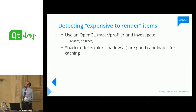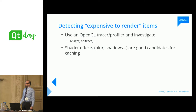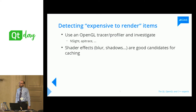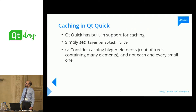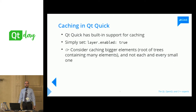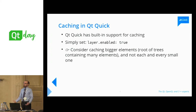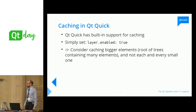Once you've found something expensive to render, you can decide to cache the results — take a screenshot of the element, and the next time you need to repaint it, just reuse the screenshot rather than repaint from scratch. Qt Quick has built-in support for this. The only thing you need to set is the property layer.enabled to true. When enabled, the element is screenshotted, and every time you need to redraw it, you use that cached screenshot — unless the element itself changes, in which case the cache is discarded and it's redrawn.